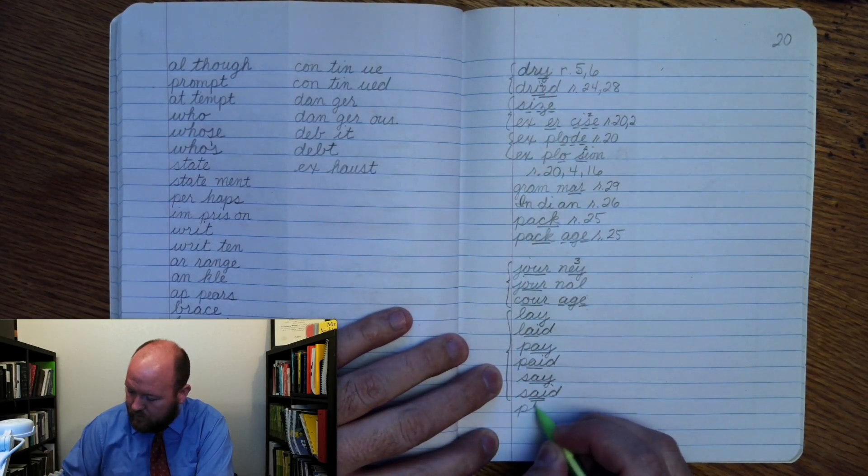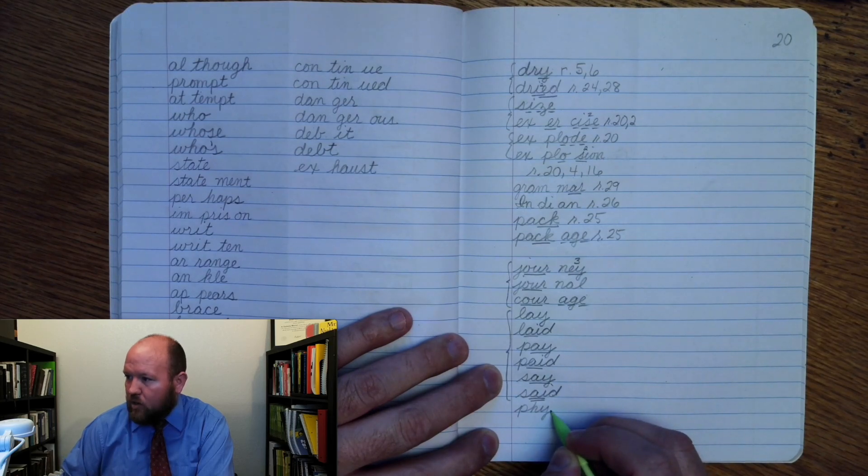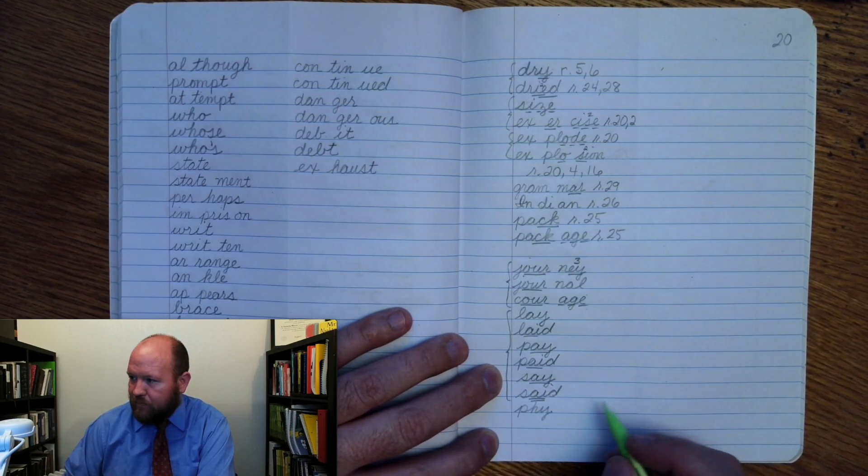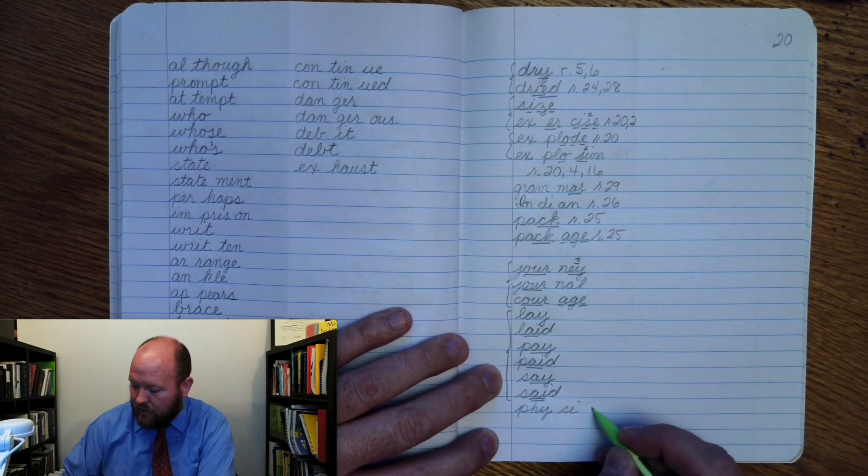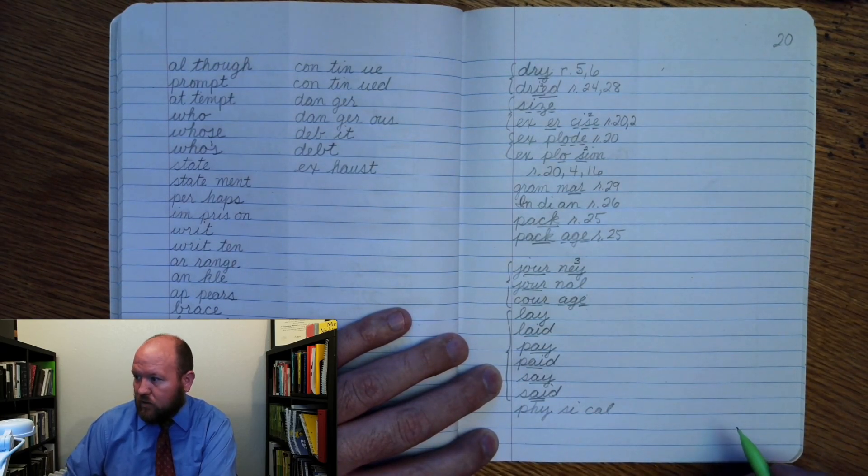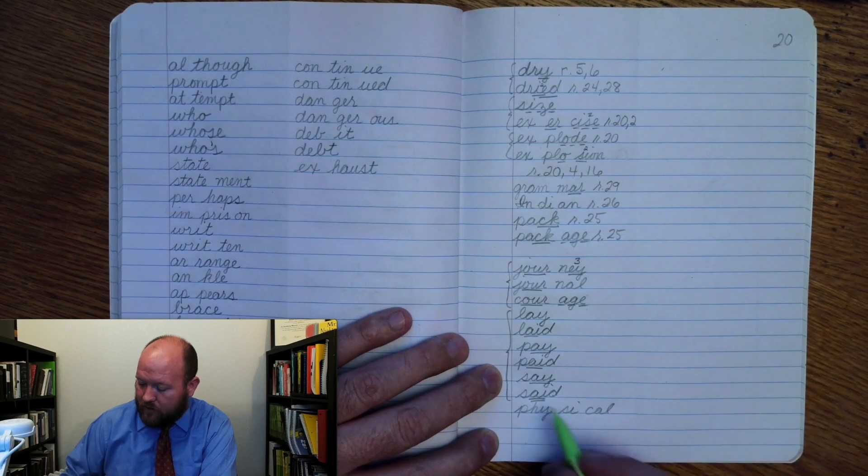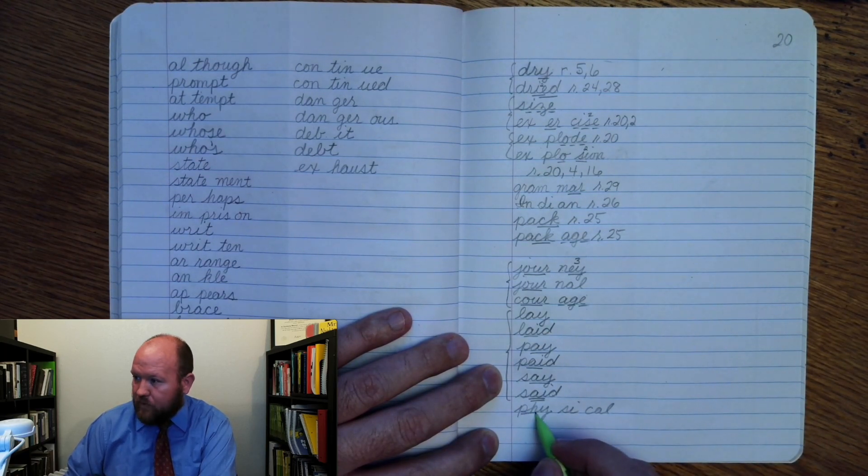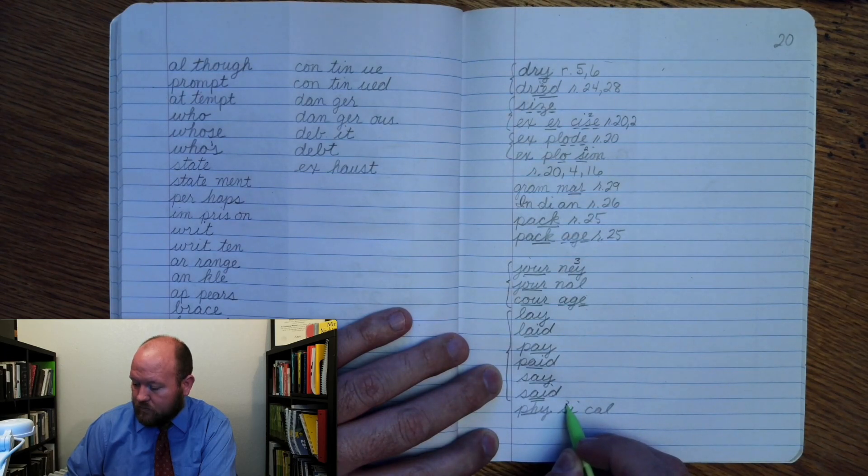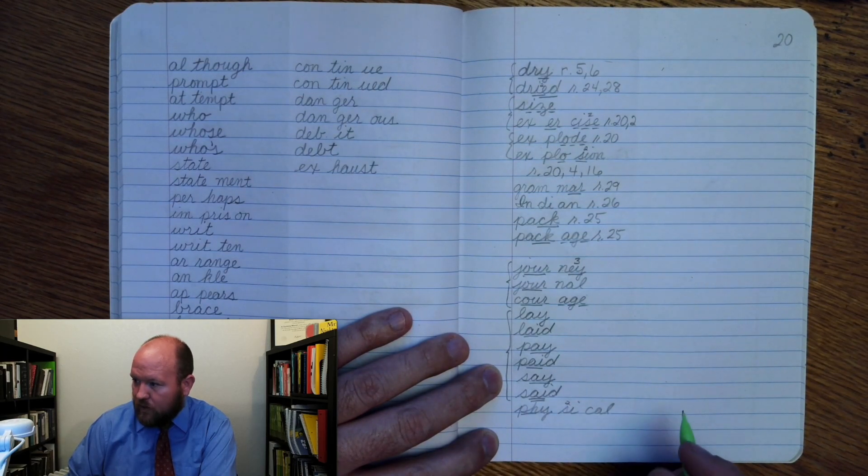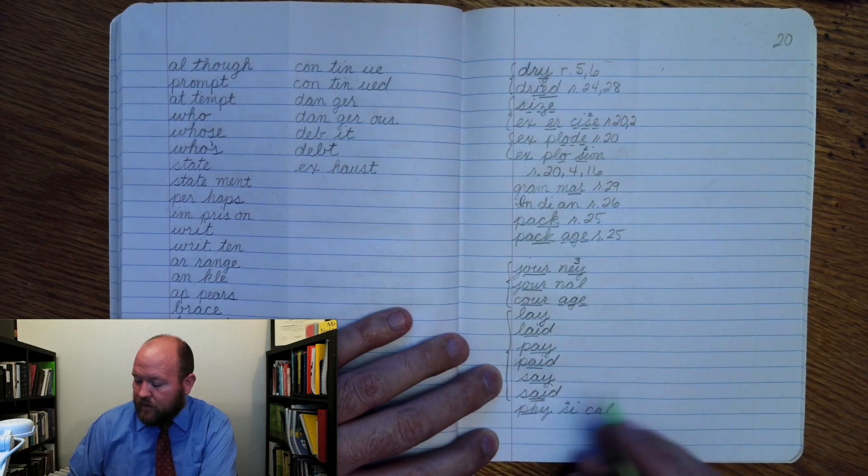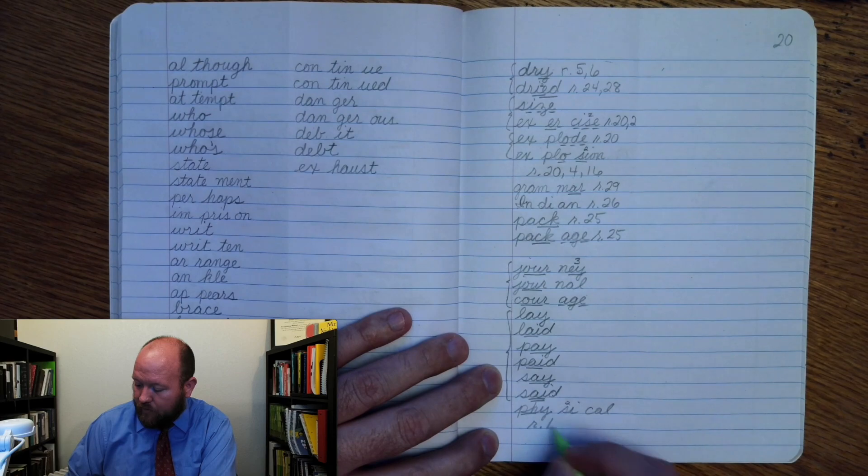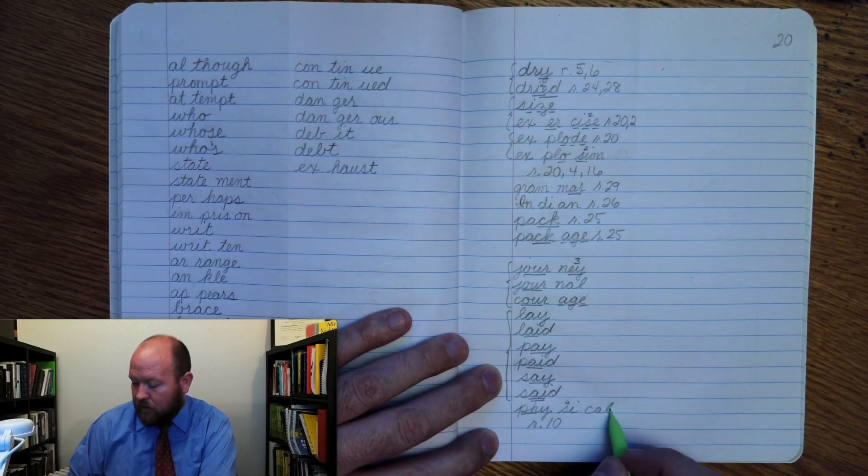Phy-zi-cal. That's a Y making that. Z is an S: 'z'. Cal is a C: 'cal'. Physical. Markings: Phy-zi-cal. Now we didn't talk about it, but we could have. Rule 10, 'al'.